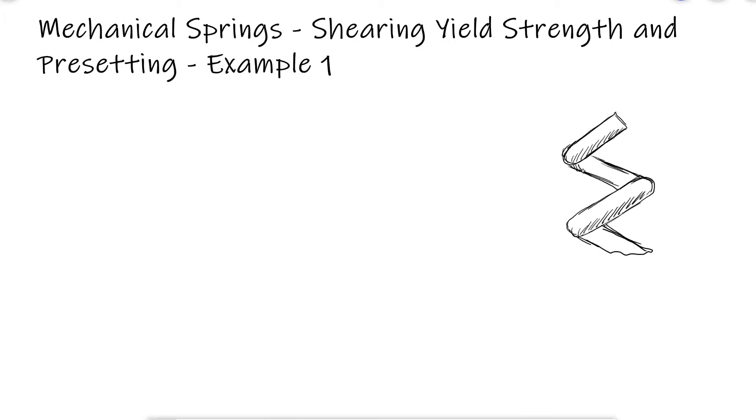A plain-end hard-drawn steel compression helical spring is made of 12 gauge Washburn and Mown wire, has an outside coil diameter of 3/4 of an inch, 20 total coils, and a free length of 3.75 inches.